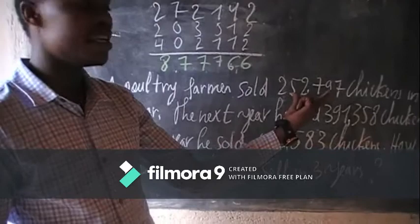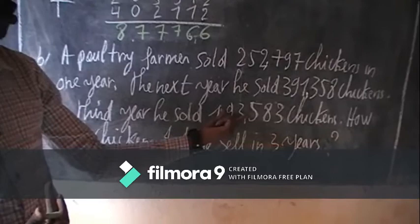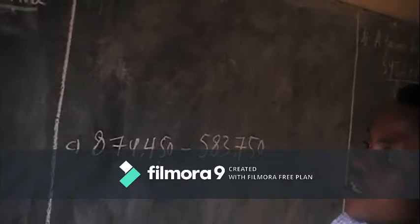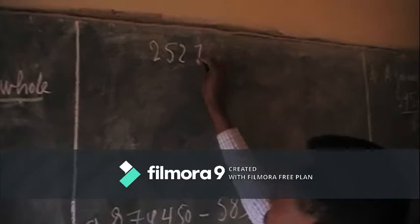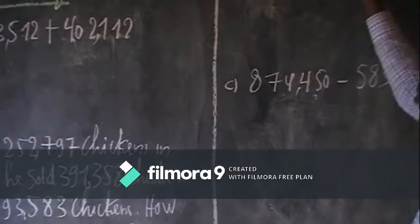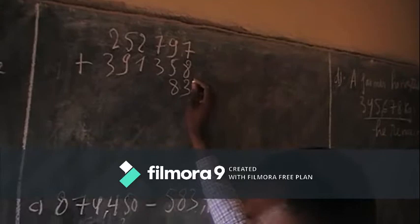They are asking us to find the total number of chickens this farmer sold in three years. So: chickens sold in the first year, plus chickens sold in the second year, plus chickens sold in the third year equals the total chickens sold in three years. Let's do it.